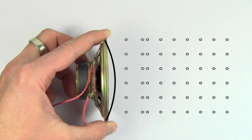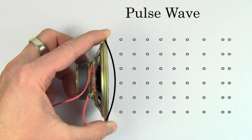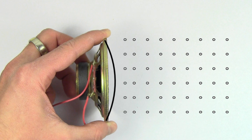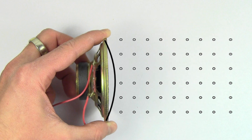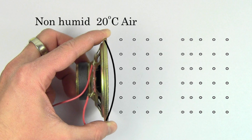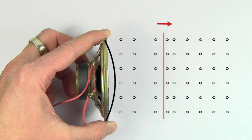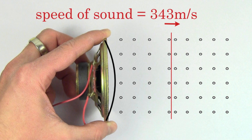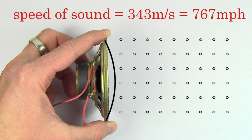If we let a speaker make one short burst, we'll create a pulse wave. We can find the speed of sound by looking at the speed of this compressed region as it travels through the medium. In non-humid air at 20 degrees Celsius, the speed of sound is about 343 meters per second, or 767 miles per hour.